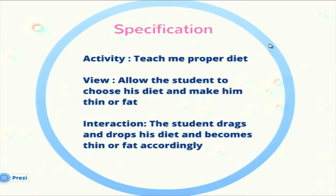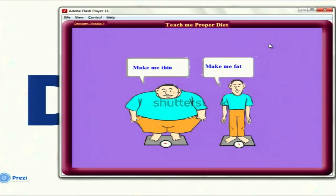The next one teaches the student how to take food properly — what is junk food, what is healthy food, and what is good for them. The student can choose their own diet and see the consequences of taking that particular diet. There is a thin person, and if he eats a lot of junk food, he would become fat.